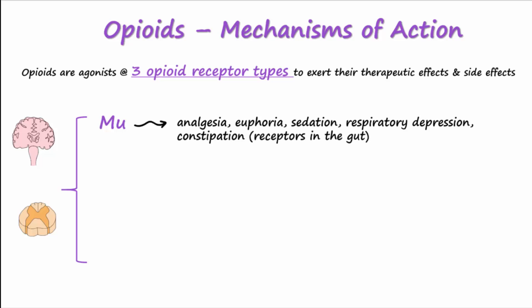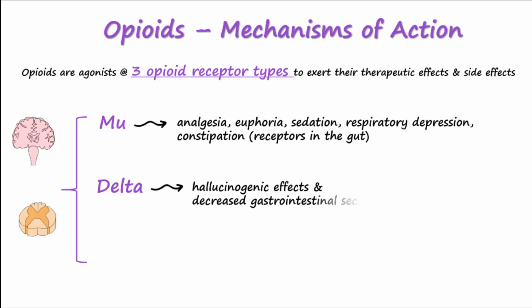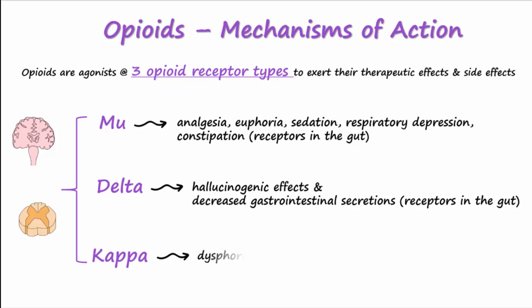Delta receptors in the brain may have a hallucinogenic effect. They are also located in the gut and cause decreased gastrointestinal secretions. Kappa receptors mediate dysphoria by reducing dopamine release.